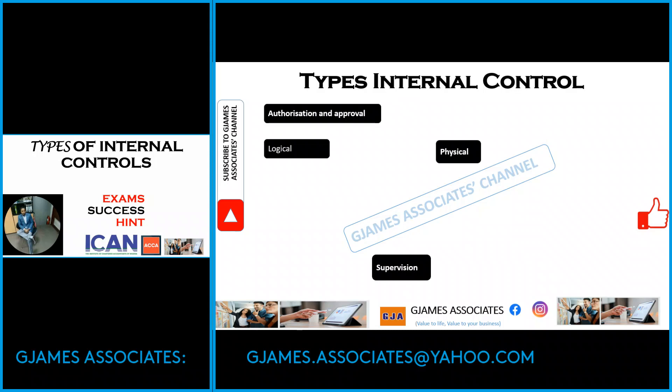Another type of internal control that should be put in place is supervision. Supervision can come logically or in the form of physical supervision of human activity within a department — who is subordinate to whom, and who oversees or has oversight of a transaction or a department. That is what supervision simply means.